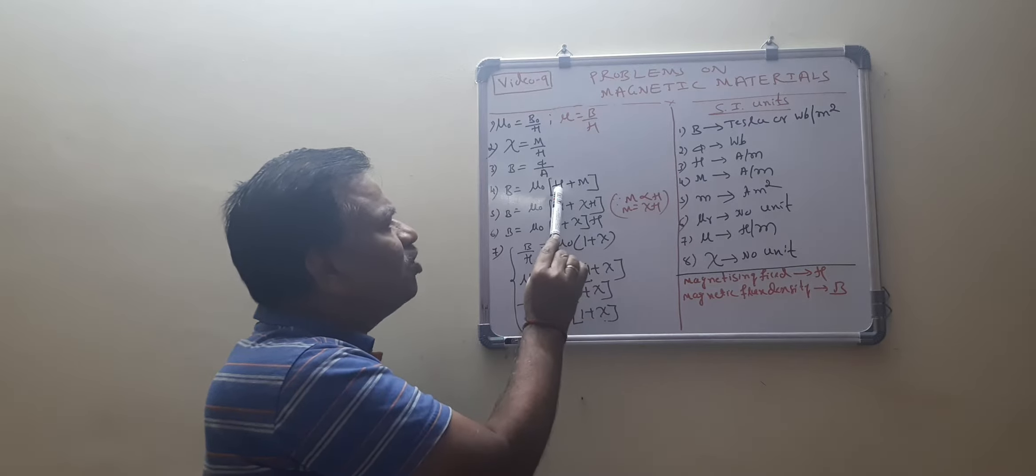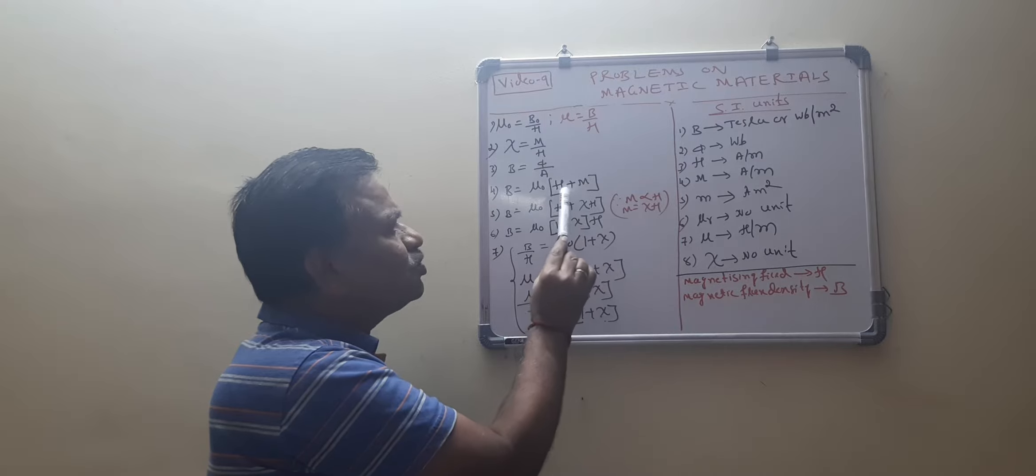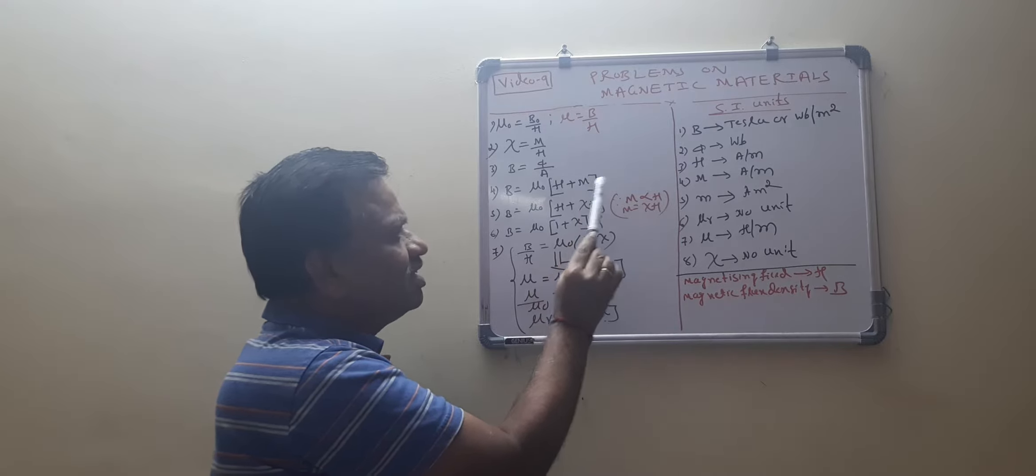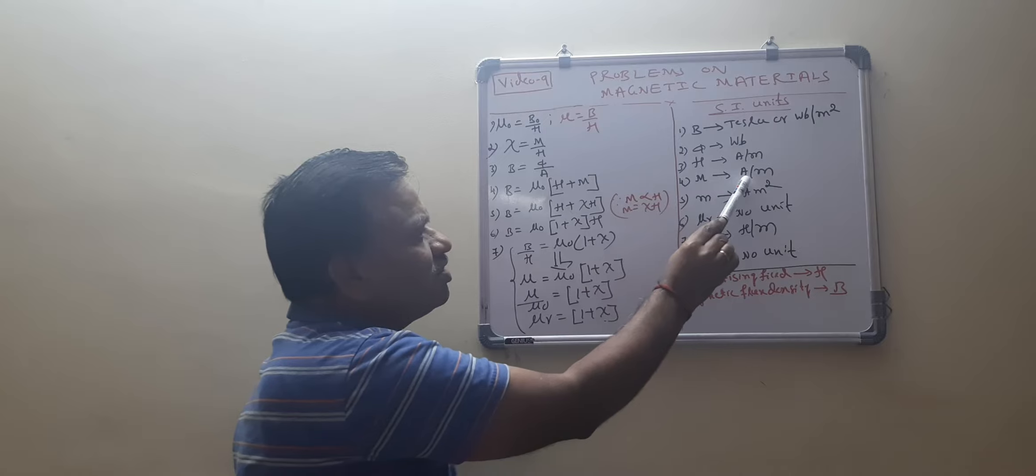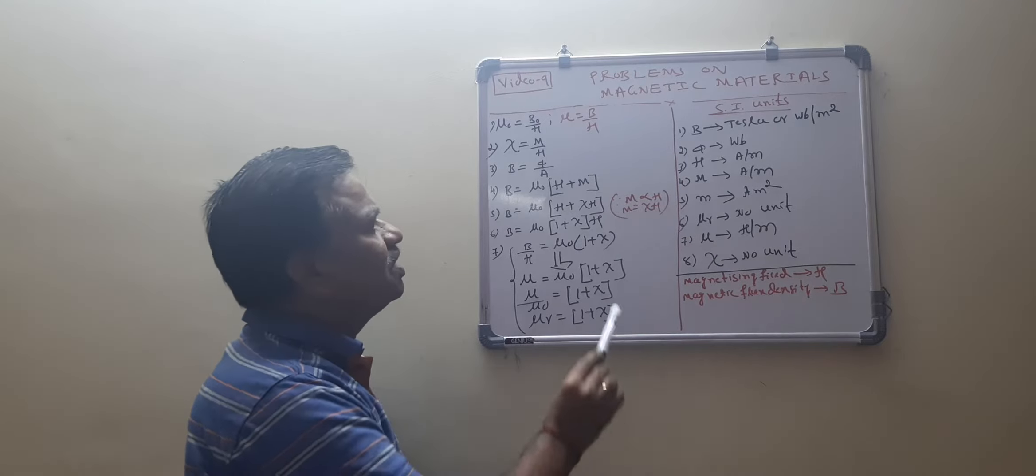When I am adding H and M, both H and M - capital M magnetization - both should have the same unit. That is why here M, the unit is what? Ampere per meter. Okay.